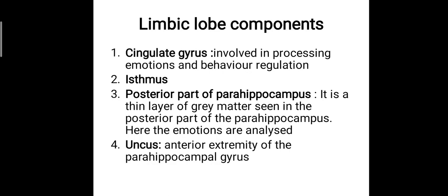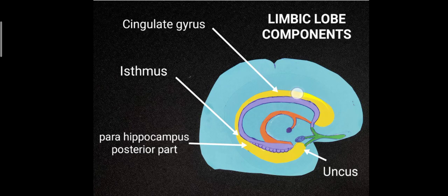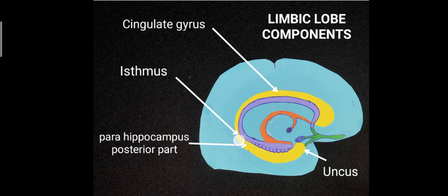Looking at the limbic lobe components in detail: the cingulate gyrus is involved in processing emotions and behavioral regulation. The isthmus is the narrower posterior part of the cingulate gyrus. The posterior part of the parahippocampus is a thin layer of grey matter where emotions are analyzed. The uncus is the anterior extremity of the parahippocampal gyrus.